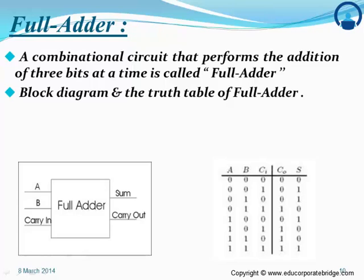The full adder consists of two inputs A, B and a third input which is the carry-in. This carry-in comes from the previous half adder — for inputs A=1, B=1 we get sum=0 and carry=1. So if we want to add three bits — A, B, and the previous carry — we use the full adder. The truth table includes A, B, C-in, C-out (current carry), and sum.